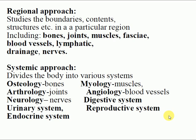When studying structures regionally, we need to know about bones, joints, muscles, fascia, blood vessels, lymphatic drainage, nerves, and aponeuroses. By the systematic approach, anatomy is studied by dividing the body into systems: osteology (study of bones), myology (muscles), arthrology (joints), angiology (blood vessels), neurology (nerves), digestive system, urinary system, reproductive system, endocrine system, and others. These are just the approaches of studying anatomy.